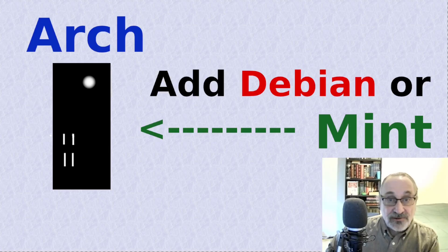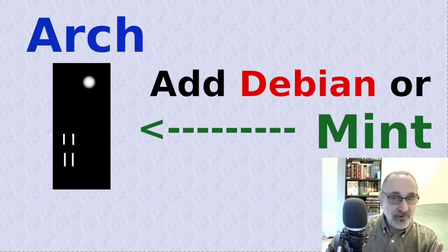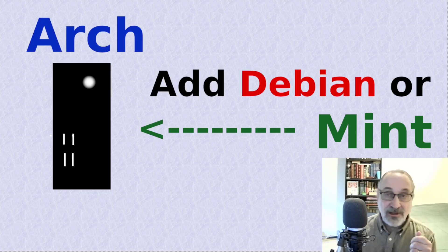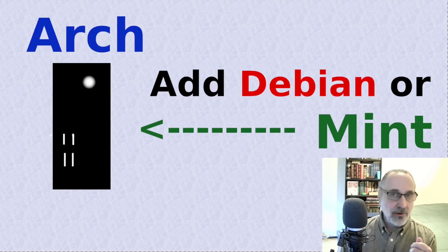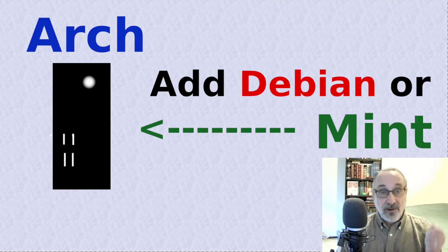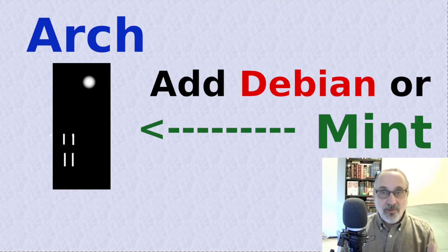If you have an Arch Linux computer and you want to install pure Debian or Linux Mint as a dual boot, you don't have to do any prep work — it's really easy. All you have to do is take the live ISO for Debian or Linux Mint, put it onto a thumb drive, plug it in, boot onto it, and go through the install.